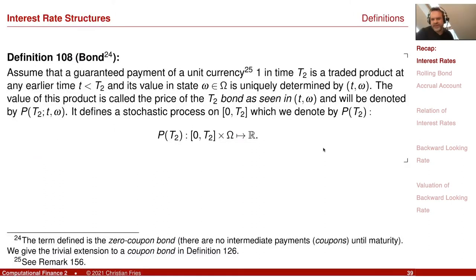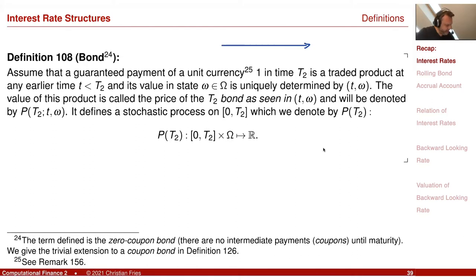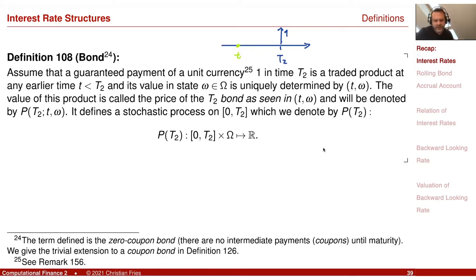We started with our atomic object, the zero bond. The zero bond is just the observed value of paying one unit of our currency at a future time t2. And we ask ourselves, what is the value at an earlier time, little t? All the objects were then derived from this.